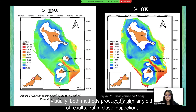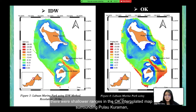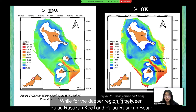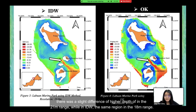Visually, both methods produce a similar yield of results, but on closer inspection there were more variable depth ranges in the Kriging interpolated maps surrounding Pulau Kuraman, Pulau Rusukan Kecil, and Pulau Rusukan Besar. In the deeper region between Pulau Kuraman and Pulau Rusukan Besar, there was a slight difference of higher depth in the 21-meter range in Kriging, while in IDW the same region is in the 18-meter range.